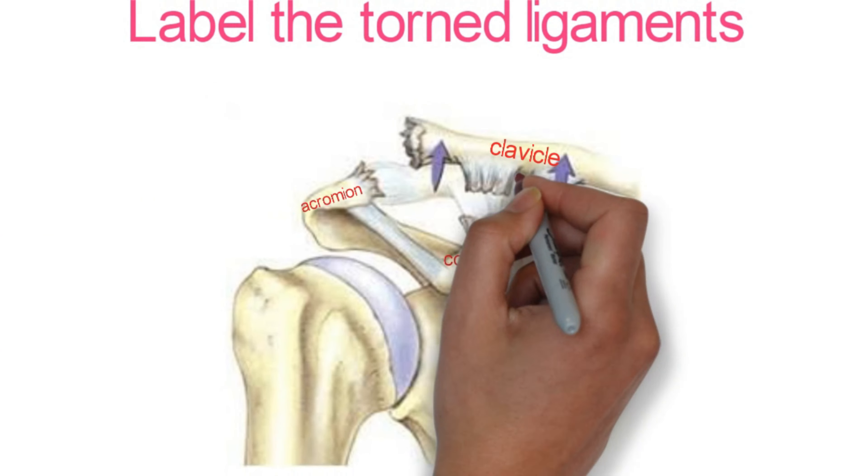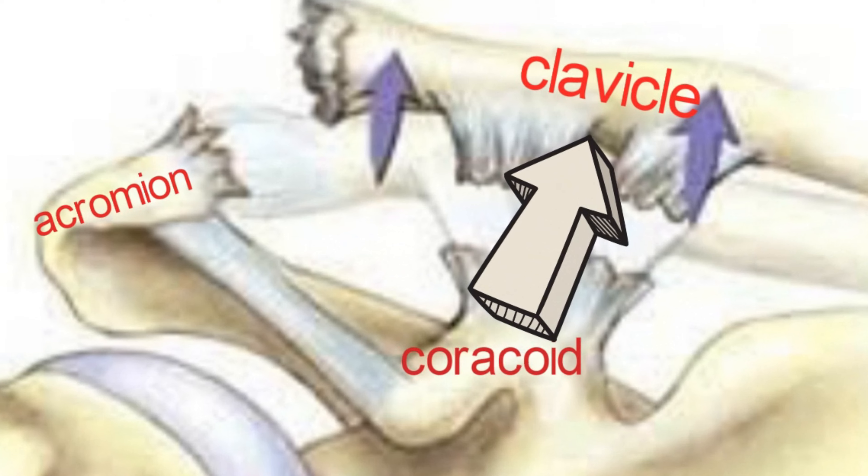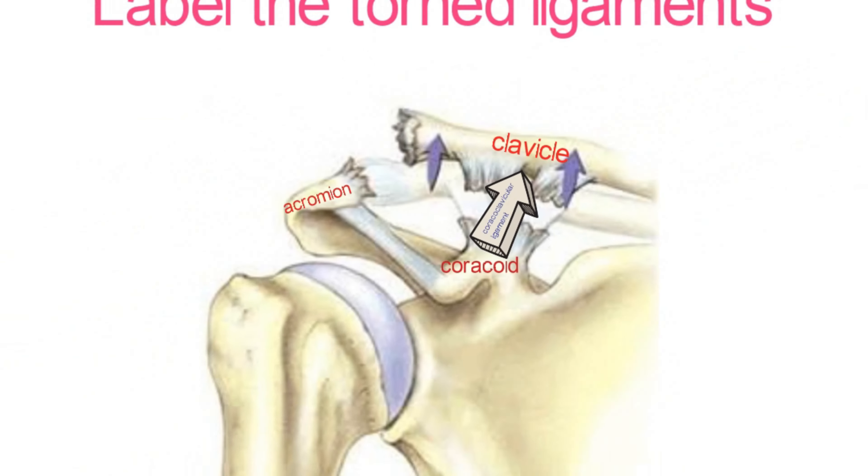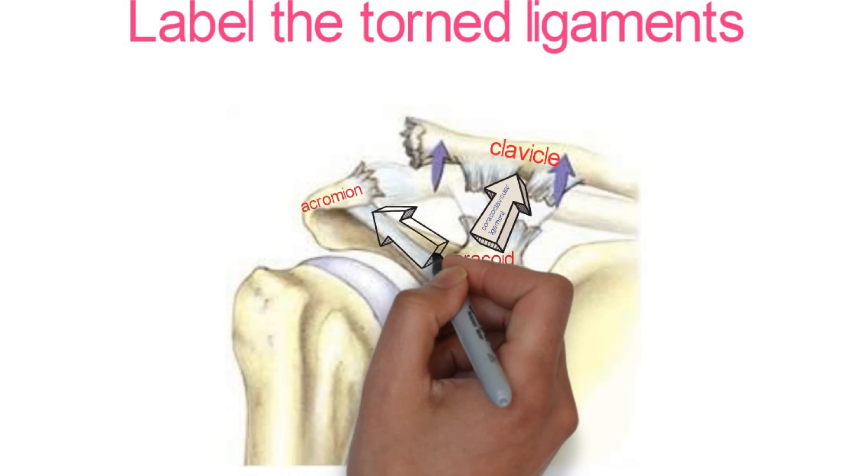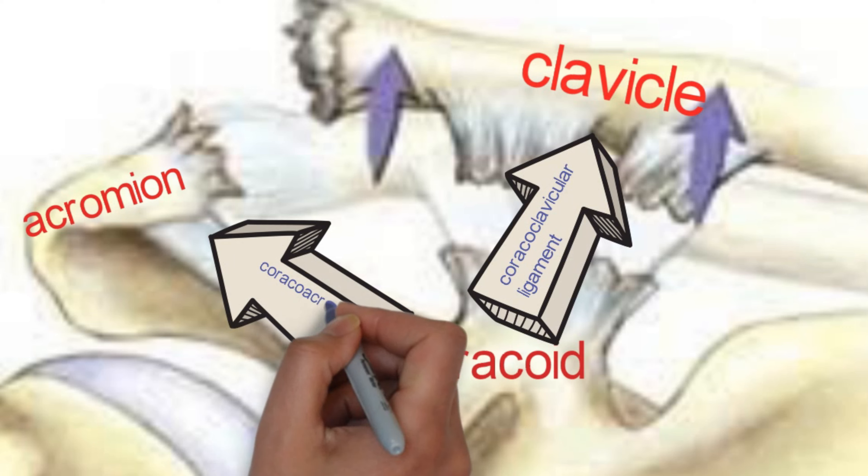Between the coracoid and the clavicle, we have the coracoclavicular ligament. And between the coracoid and the acromion, we have the coracoacromion ligament.